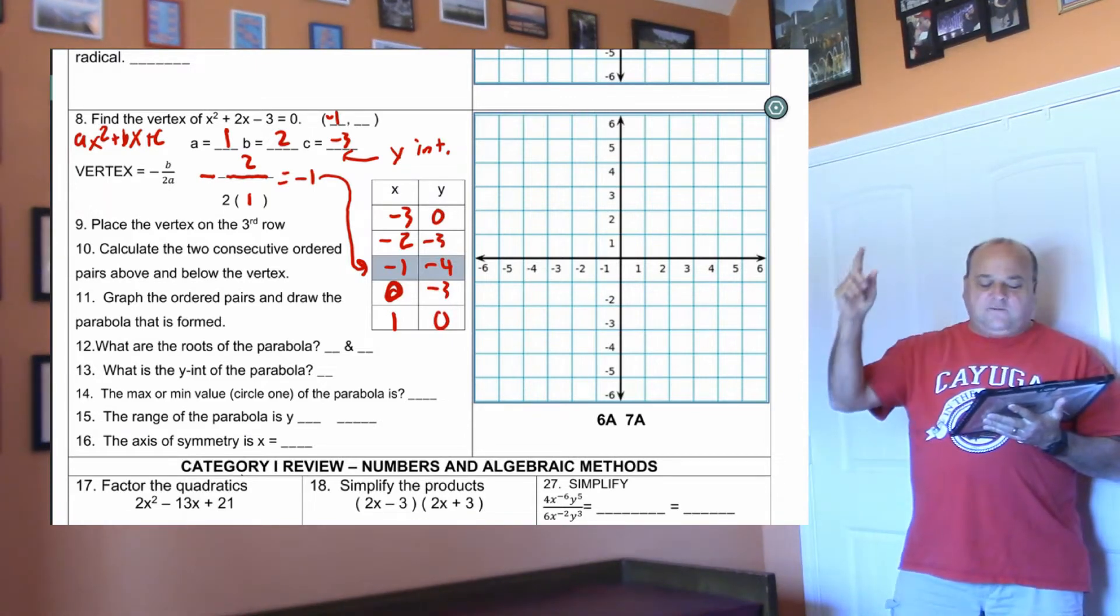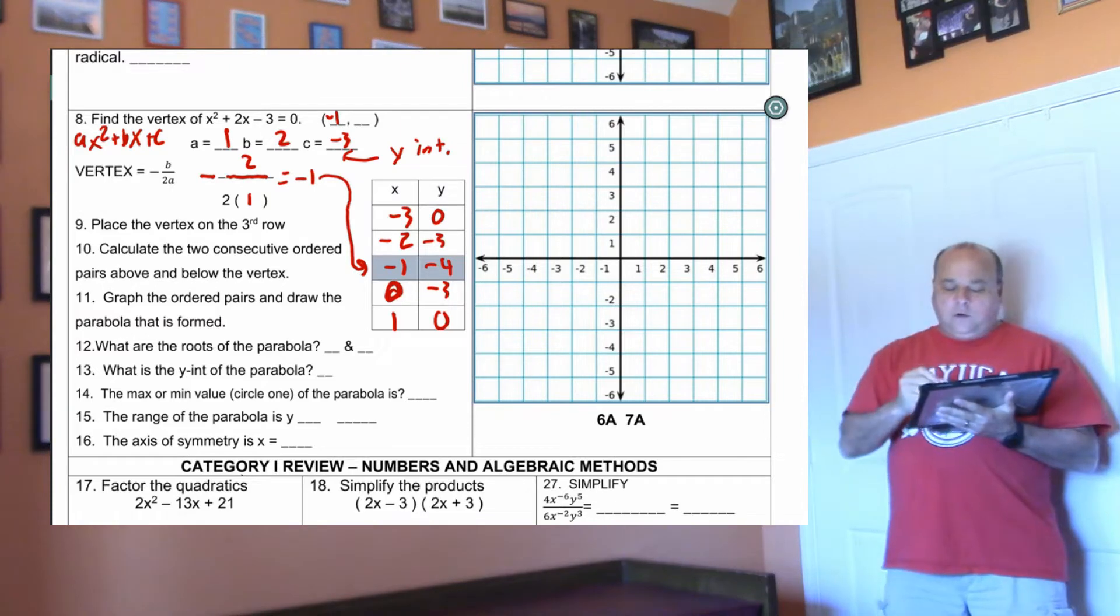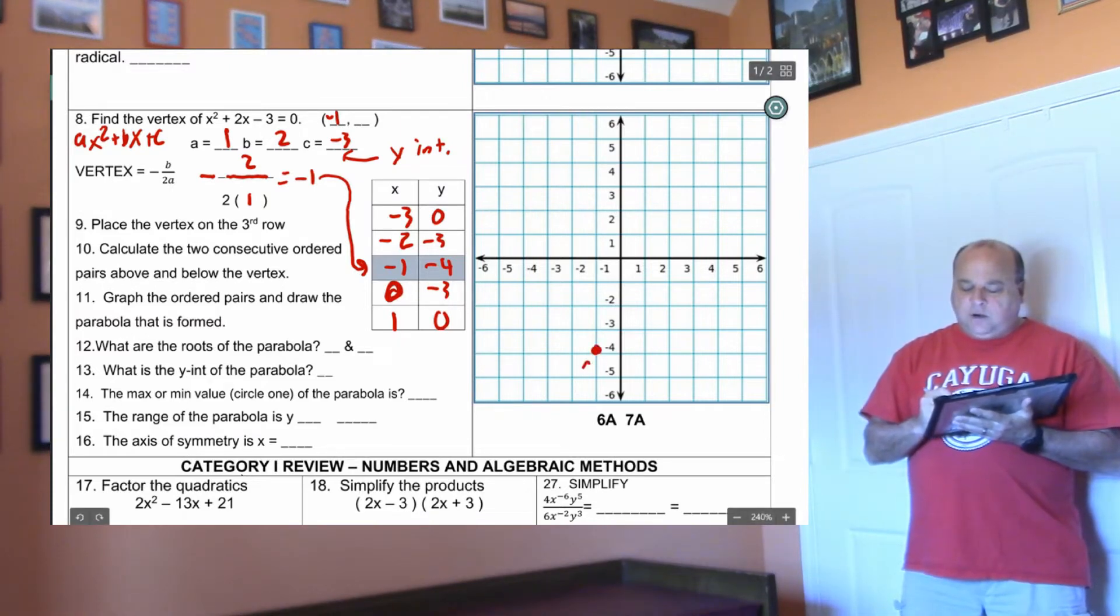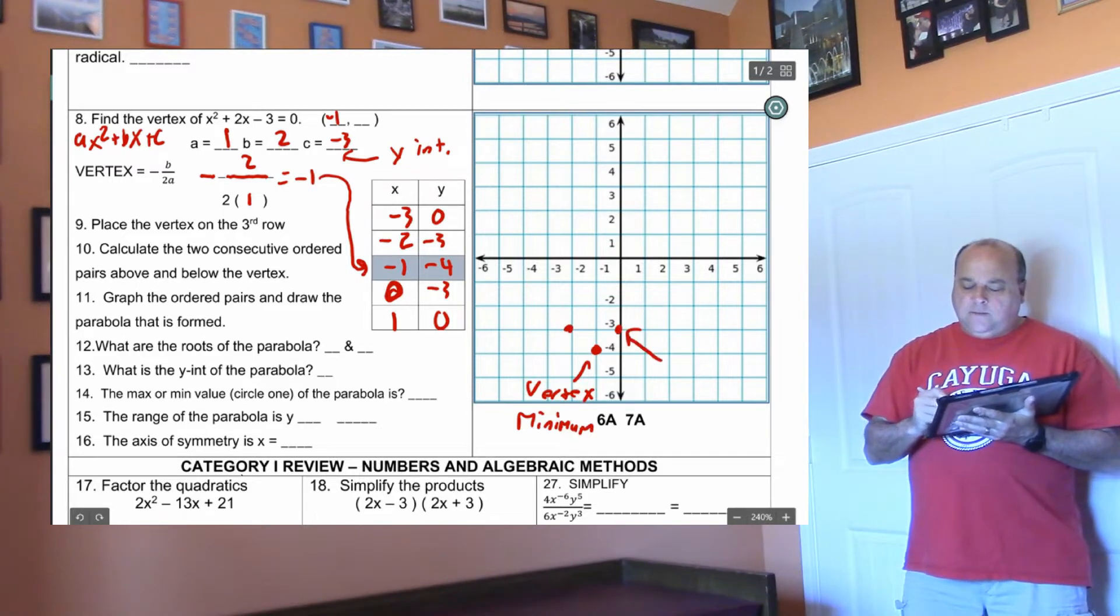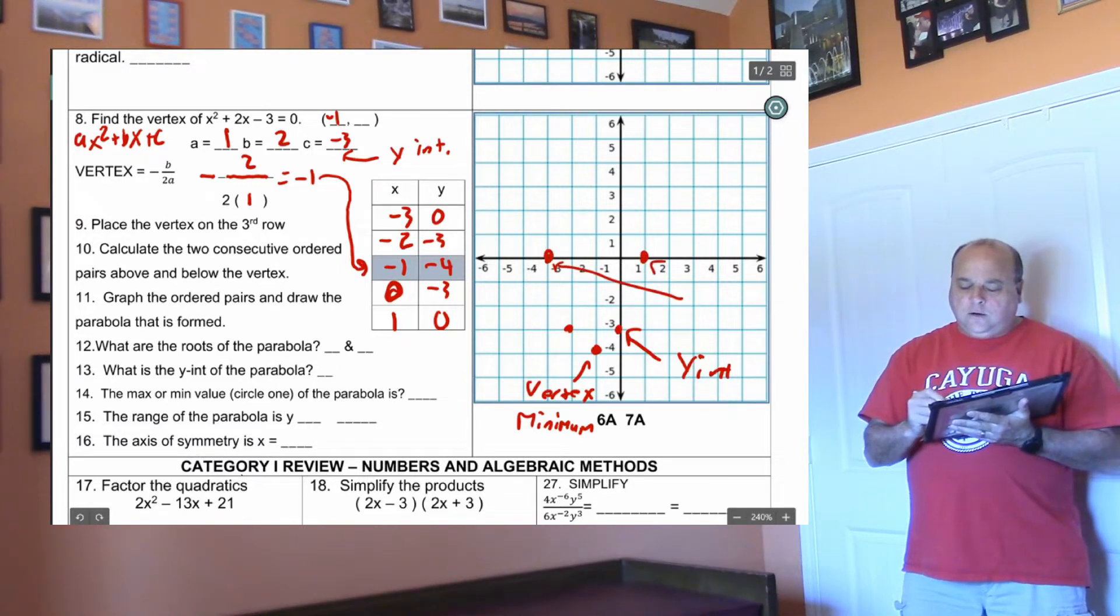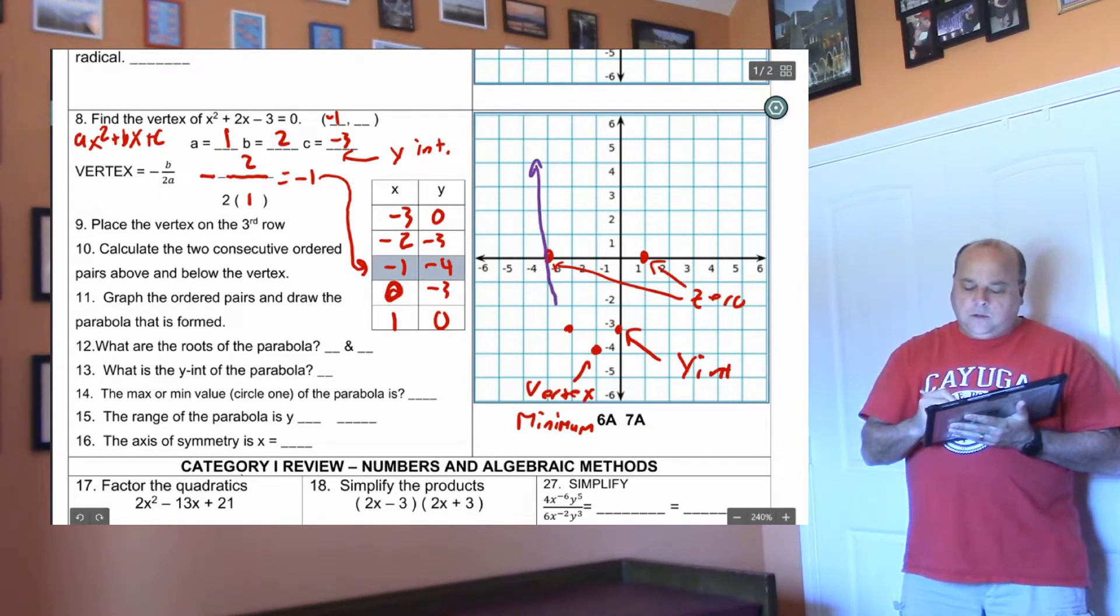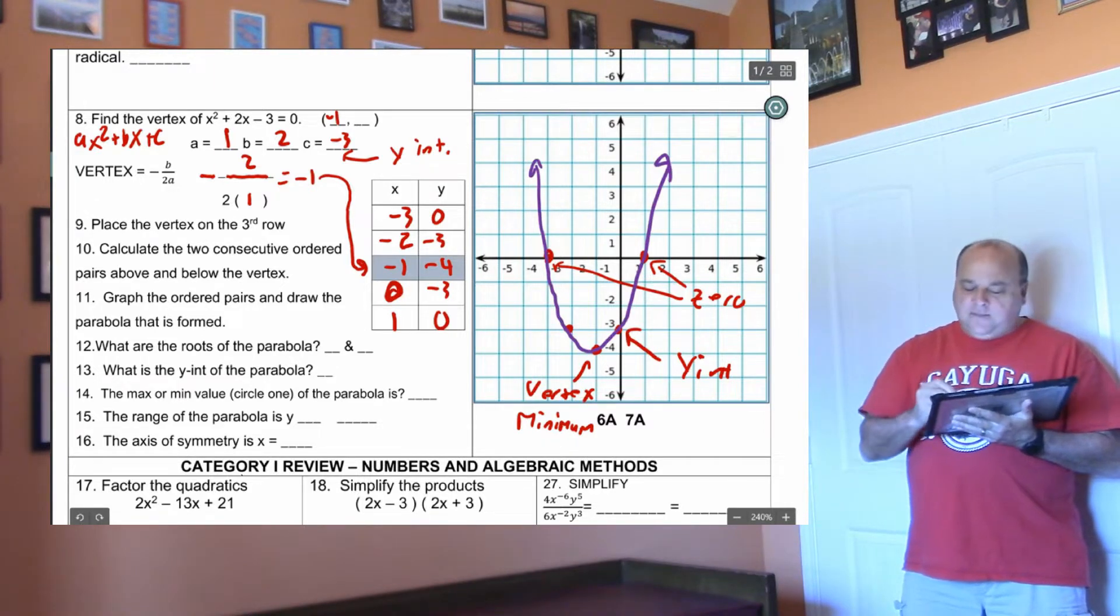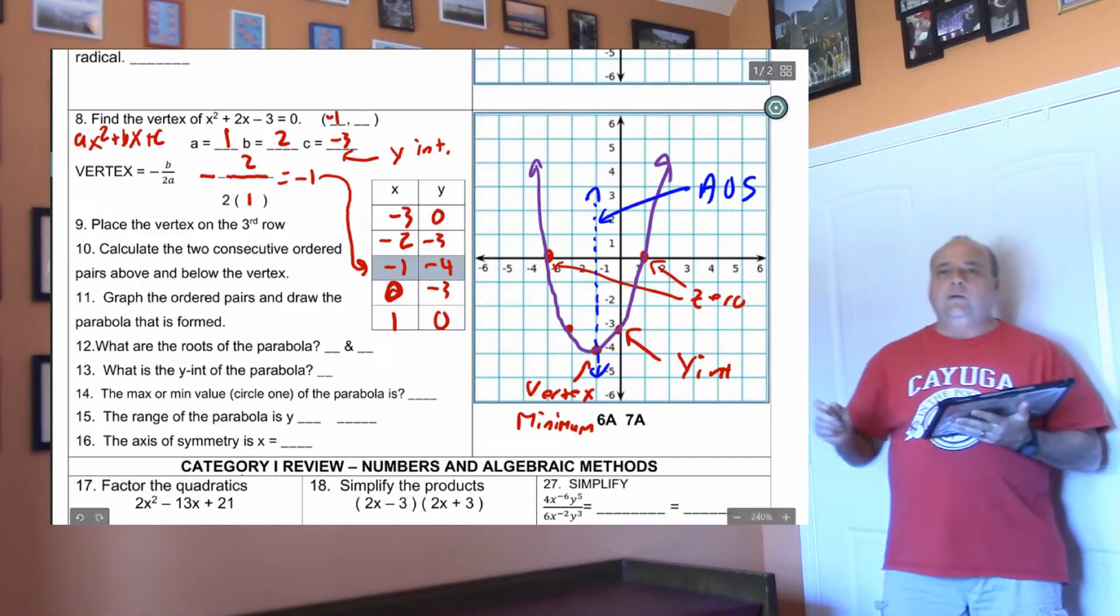In this right here, we can find our y-intercepts, our x-intercepts, our zeros, and our vertex. So let's graph the ordered pairs. So negative one, negative four is going to be our vertex. Since this is at the bottom, it's going to be a minimum. The next dots will be at the negative threes. This is the y-intercept. And then we got one zero and negative three zeros. These two right here are the zeros. And then we'll draw the parabola. And remember, the line that goes through the vertex and splits it in half is the axis of symmetry.